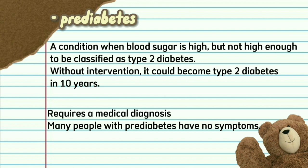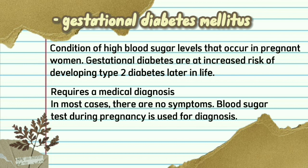Many people with pre-diabetes have no symptoms. Gestational Diabetes Mellitus is a condition of high blood sugar levels that occur in pregnant women. Both mother and child are at increased risk of developing type 2 diabetes later in life. Requires a medical diagnosis. In most cases there are no symptoms; blood sugar testing during pregnancy is used for diagnosis.